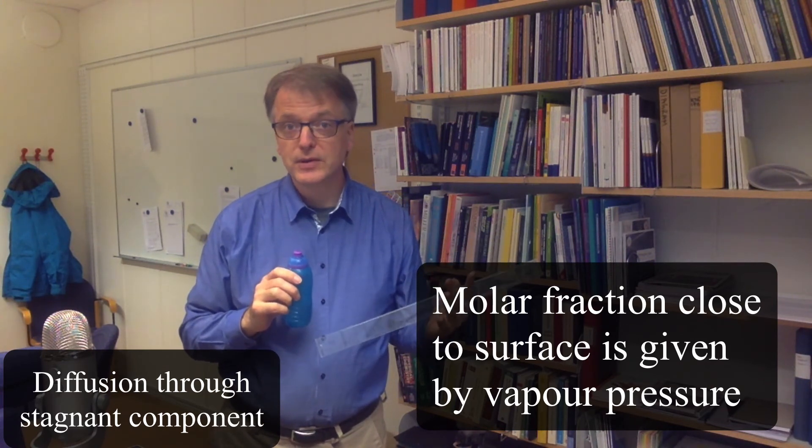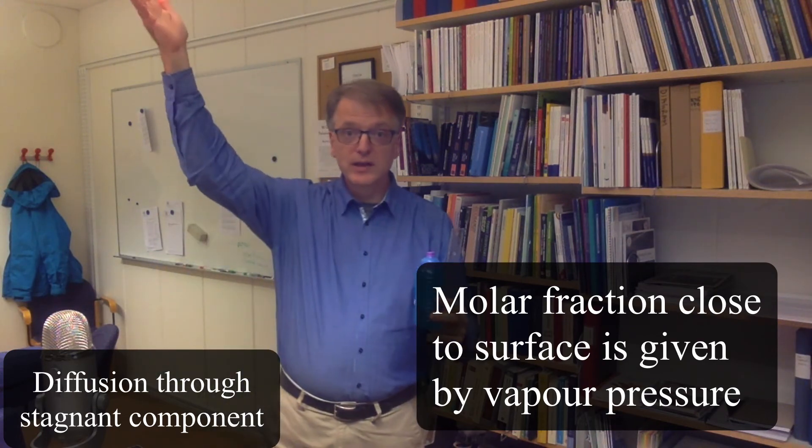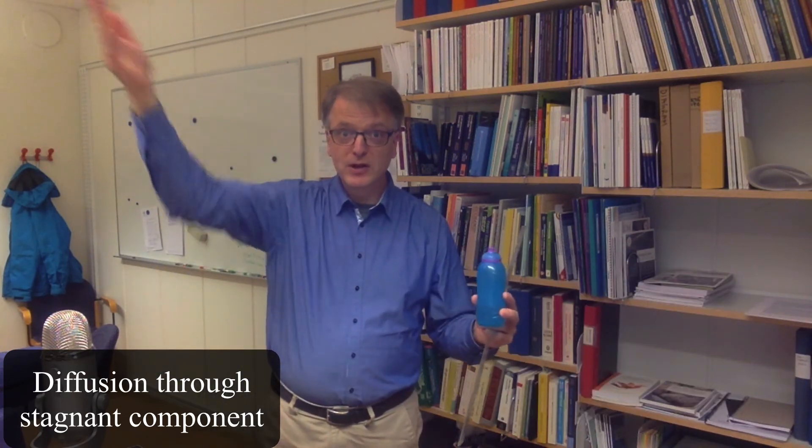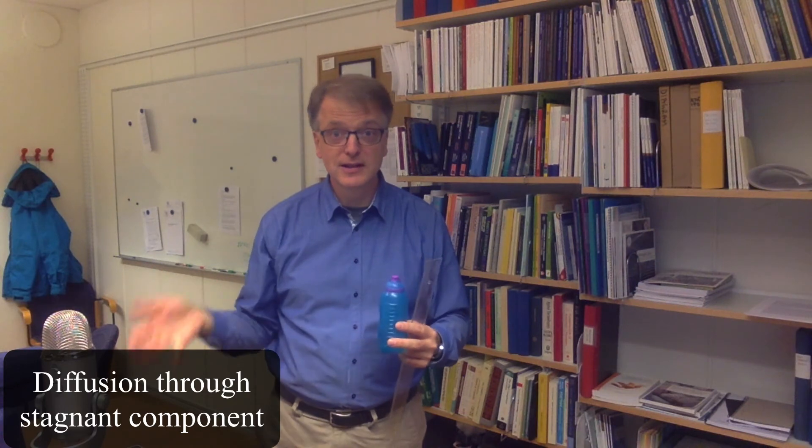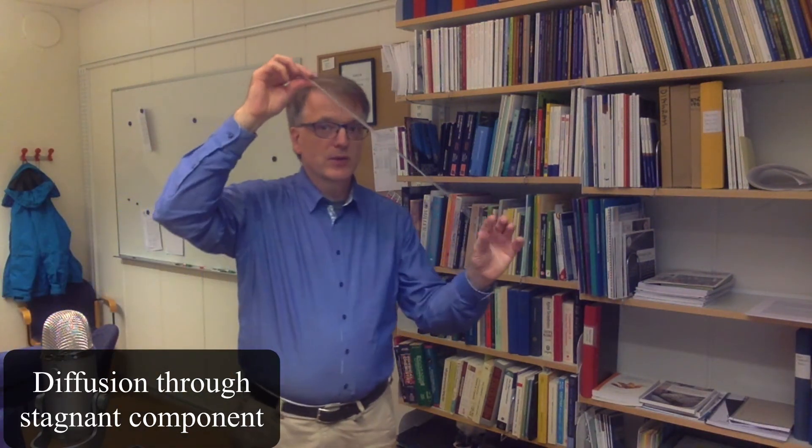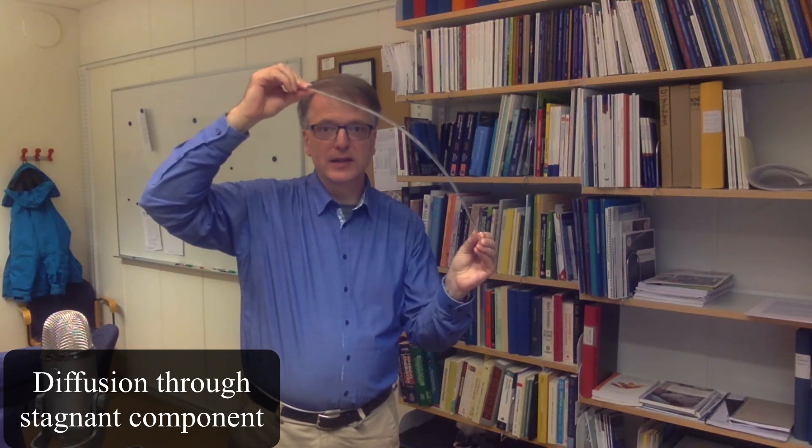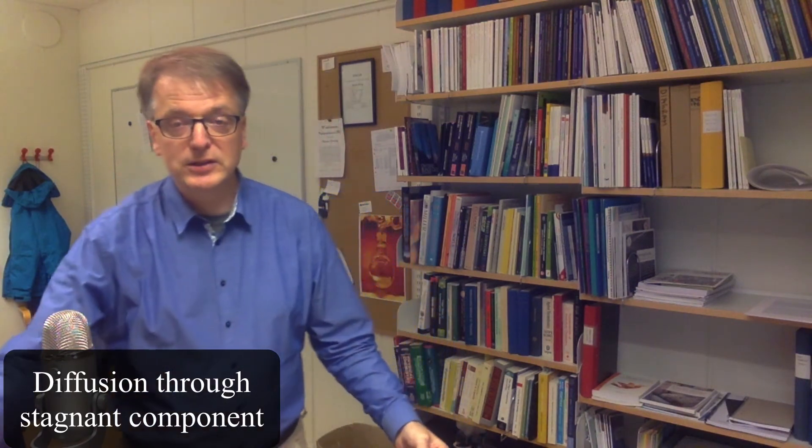So the vapor pressure for that substance. And in the surrounding atmosphere, well you can figure out what the concentration is there, right? So these two places are fixed and then it moves like that in the direction of the convection.